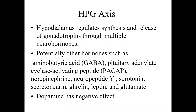Gonadal development is a complicated process because not only gonadal steroids but other hormones are also involved in regulating gonadal development and different stages of maturation, including the release of gametes from both male and female fish. Other hormones potentially involved in control of the HPG axis include GABA, pituitary adenylate cyclase-activating peptide, norepinephrine, neuropeptide, serotonin, ghrelin, leptin, and glutamate — these play a positive role. Dopamine, however, can have a negative effect on gonadotropin function in the HPG axis.